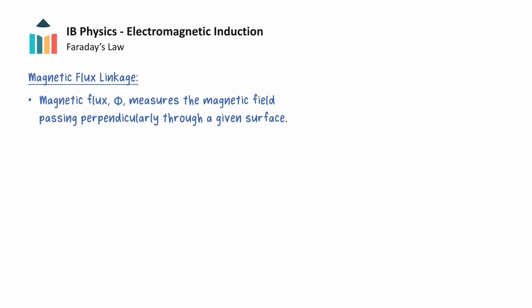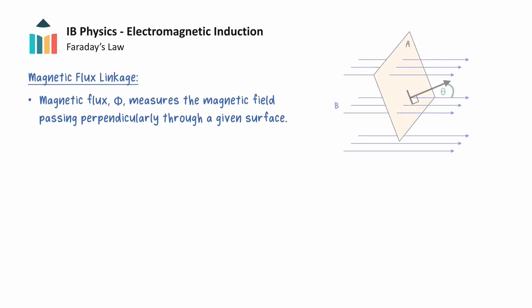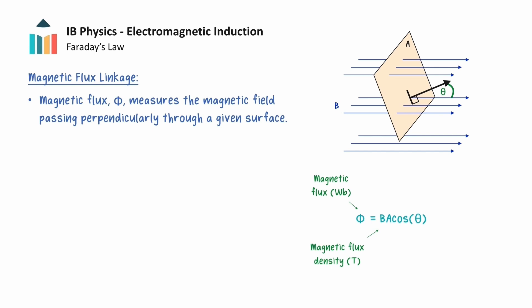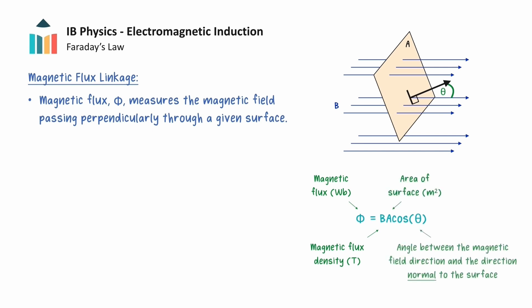Recall that magnetic flux is a quantity that measures how much the magnetic field passes perpendicularly through a given area. If we have a rectangular loop of wire in a uniform magnetic field, the magnetic flux through the loop can be calculated with the following equation, where B is the magnetic flux density, A is the area of the given surface, and the angle theta is measured between the direction of the magnetic field and the direction normal to the given surface.